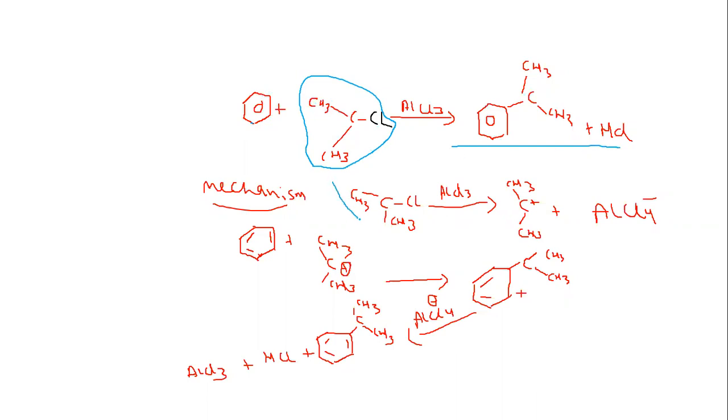The first step is generation of electrophile. CH3, CH3 - with carbon, there are two methyl groups and a chloro group. In AlCl3, the reaction will become AlCl4 minus. It will become CH3, CH3 isopropyl carbocation. It will generate an alkyl carbocation.